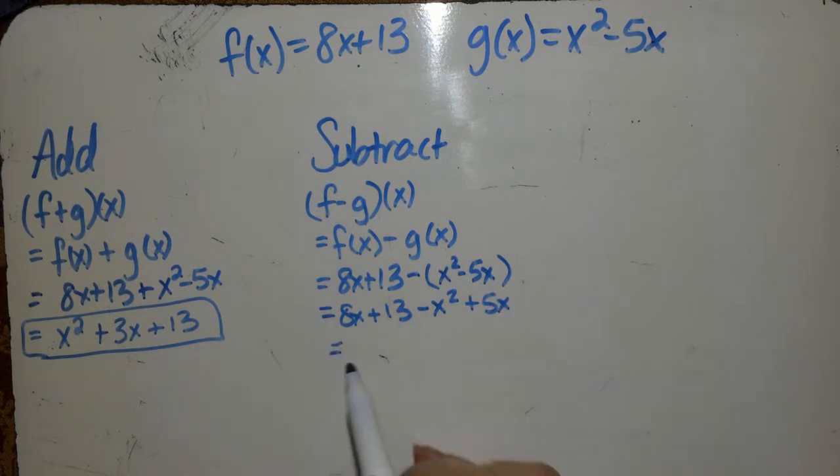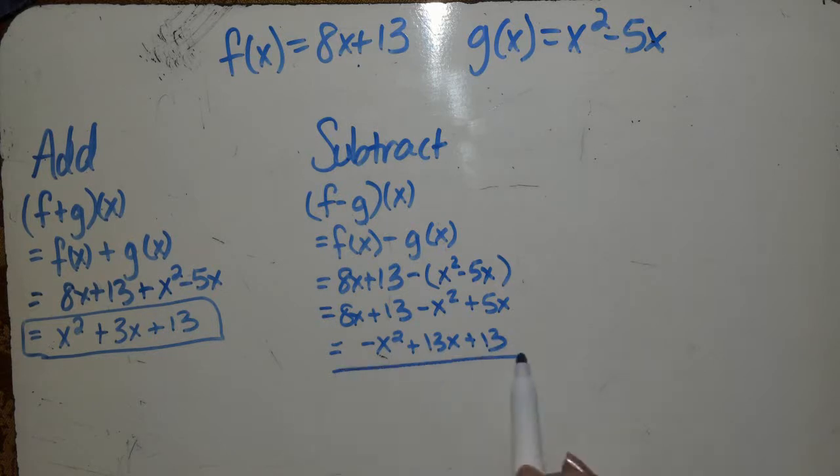And now you can combine like terms, and you get negative x squared plus 13x, so 8x plus 5x is 13x, plus 13 for our answer.